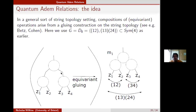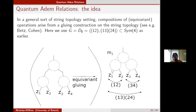With a gluing construction you shrink the broken flow lines to a point and get back the point M1 — where 1 and 2 come together and 3 and 4 come together — which is a fixed point under the D8 action. In particular, the operations associated to M1 are the compositions of quantum Steenrod squares.